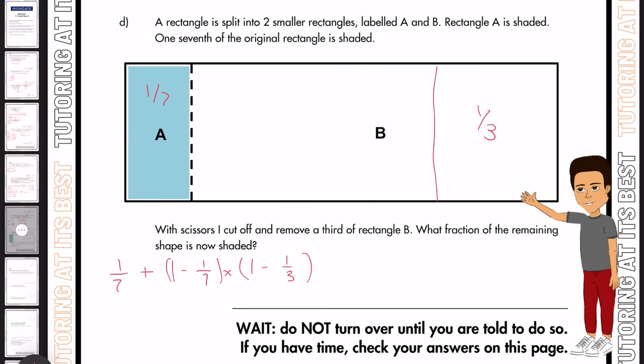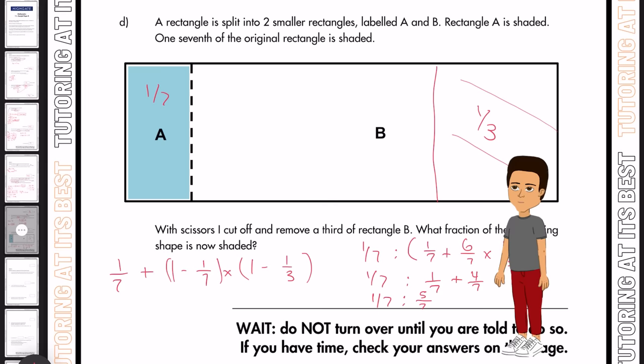And we now know that the shaded area is one over seven. Therefore, if we take a look at this in a ratio format between the shaded and the remaining, we're simply going to have one seventh to a ratio of one over seven plus six over seven multiplied by two over three. Because two thirds is what is remaining after the one third has been cut off.